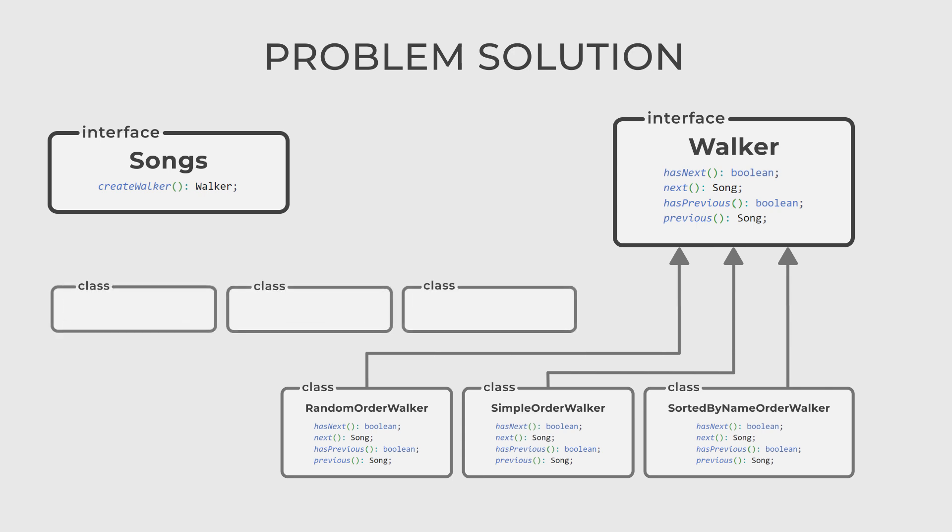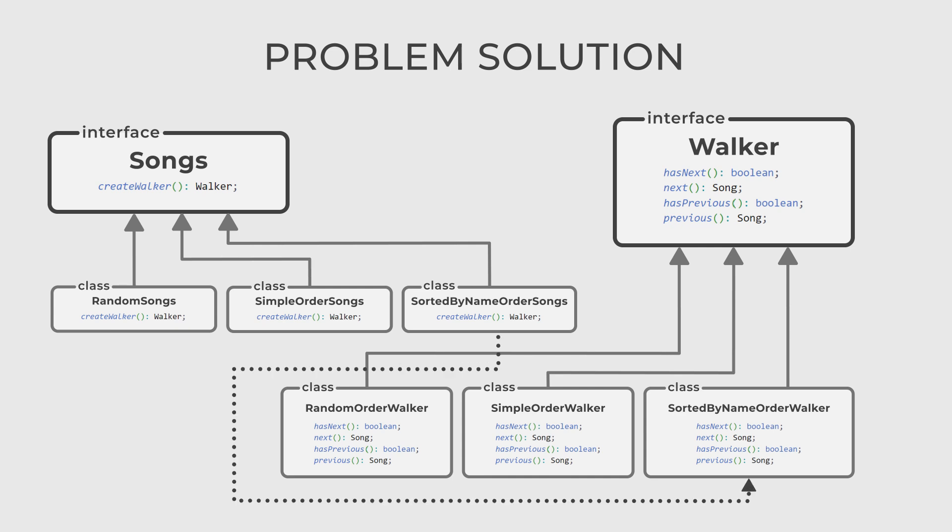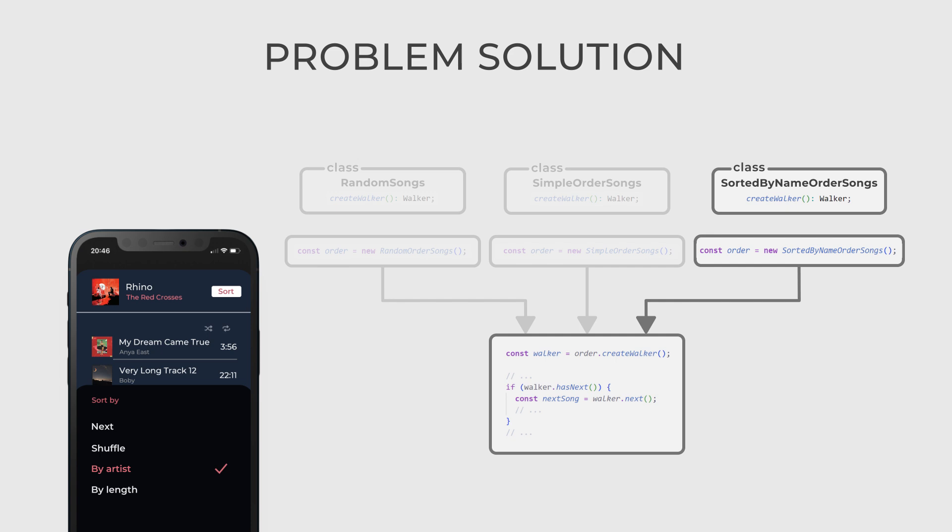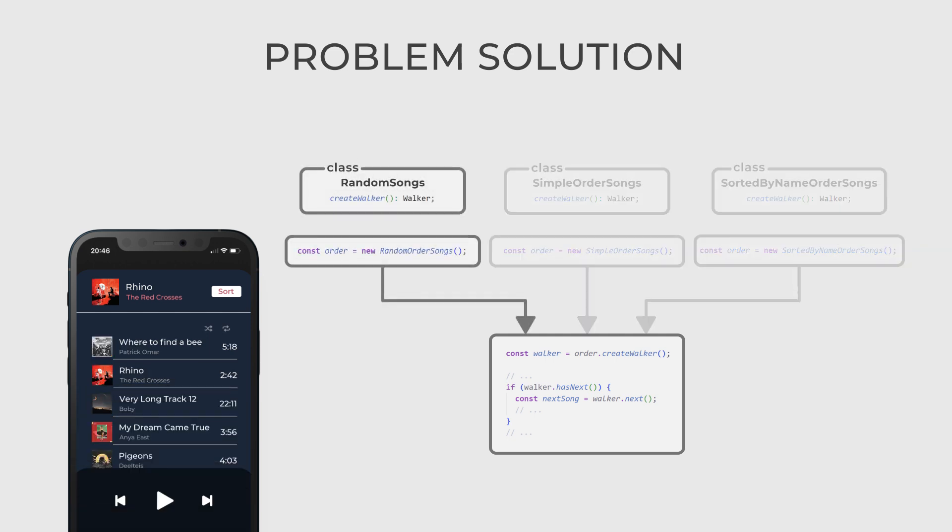Finally, we can create concrete collections of songs by implementing the songs interface and using the desired iterators, the random songs, the simpleOrder songs, and sortedByNameOrder songs. When the user selects their favorite order, you instantiate the appropriate collection, and this collection knows how to walk over songs the user has.